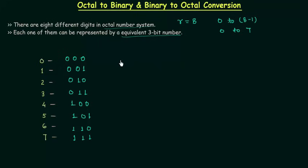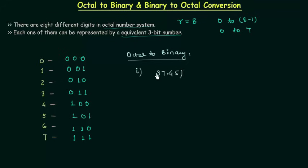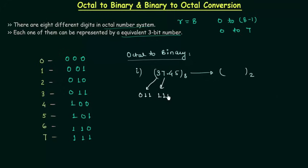First we will see octal to binary conversion. The octal number is 37.45, and we want the binary equivalent of this number. From the table we can write 3 as 011 and 7 as 111.